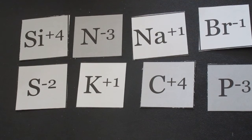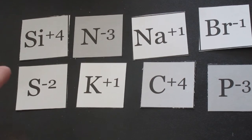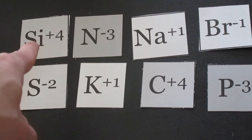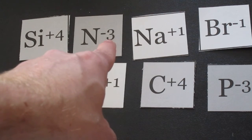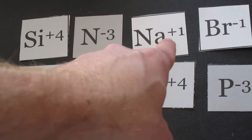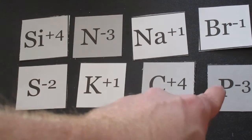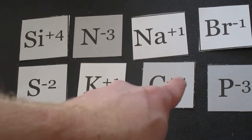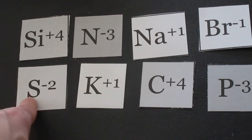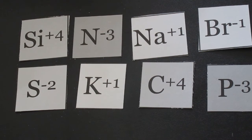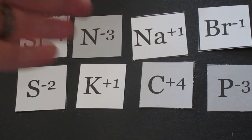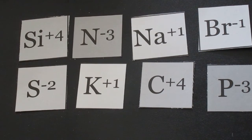And for one of the last questions, what is silicon trying to copy? What is nitrogen trying to copy? What is sodium trying to copy? Bromine, phosphorus, copper plus four, potassium, and sulfur. So what I'm asking is, what element are these elements trying to copy?